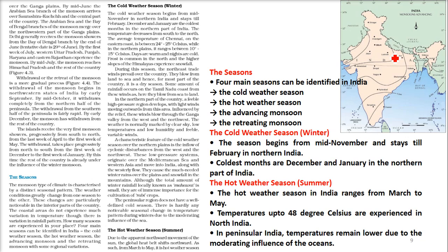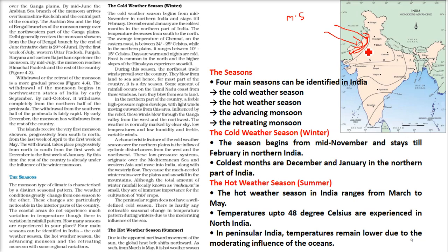One more characteristic feature of the cold weather season over the northern plains is the inflow of cyclonic disturbances from the west and northwest. These are low pressure systems originating from the Mediterranean Sea and are brought along with the westerly jet stream. They cause winter rain over the plains and snowfall in the mountains. The total winter rainfall is quite low and is locally known as 'Mahavat,' but it is very important for rabi crops.